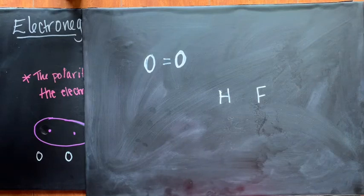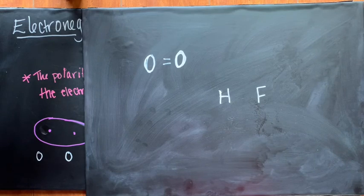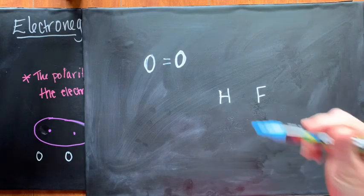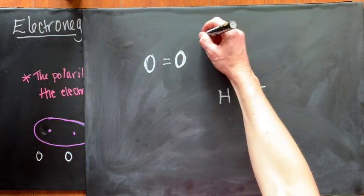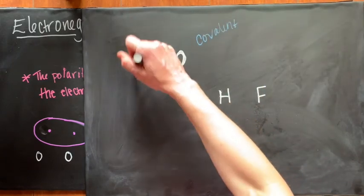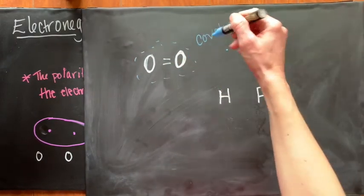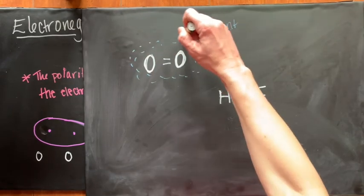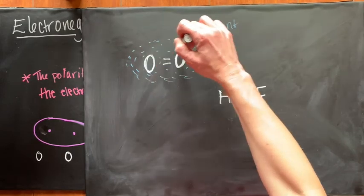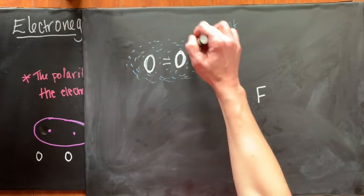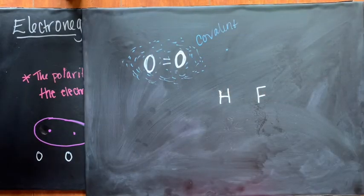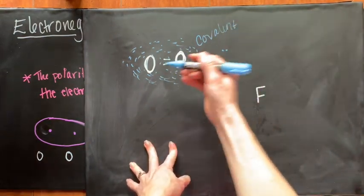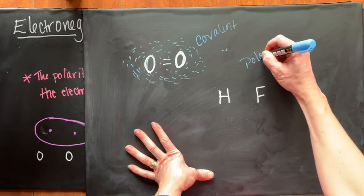Before we get into electronegativity, in a regular covalent bond these electrons have an equal probability of being around either atom. You would find these electrons around both atoms with no greater likelihood of being around one versus the other — they're equally likely to be around both.